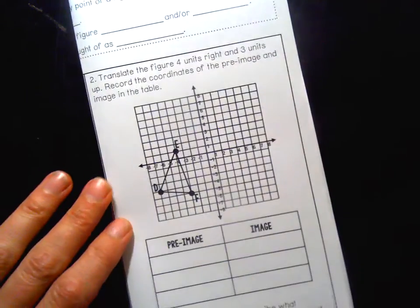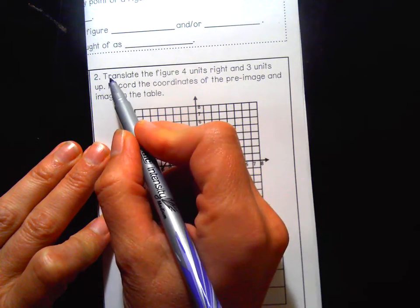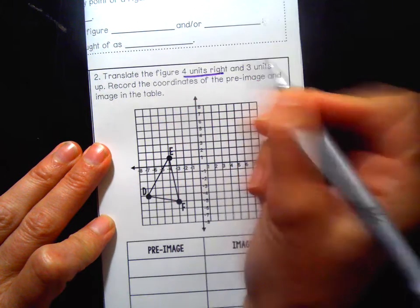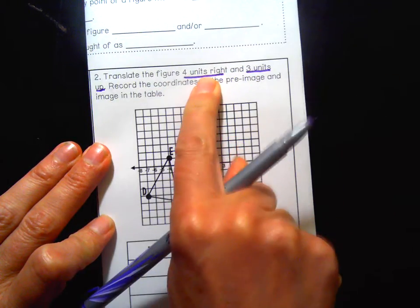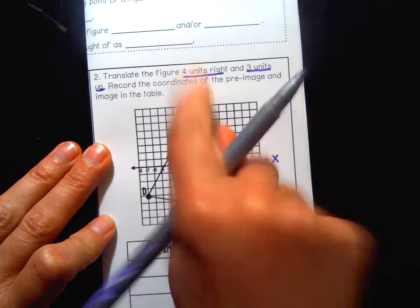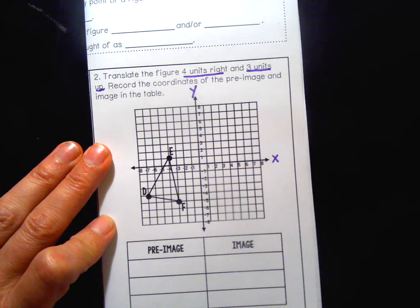Here, because sometimes you're not given the picture on a graph first, translate the figure four units right and three units up. Right is on my x-axis and up would be on my y-axis because the y-axis goes up and down.